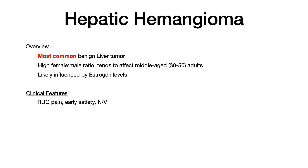Epidemiology is very important to know once you're at that Step 2 phase. Hepatic hemangioma has a very high female to male ratio. It tends to affect middle-aged adults roughly between the ages of 30 and 50, likely influenced by estrogen levels. The most high-yield fact: it is the most common benign liver tumor.